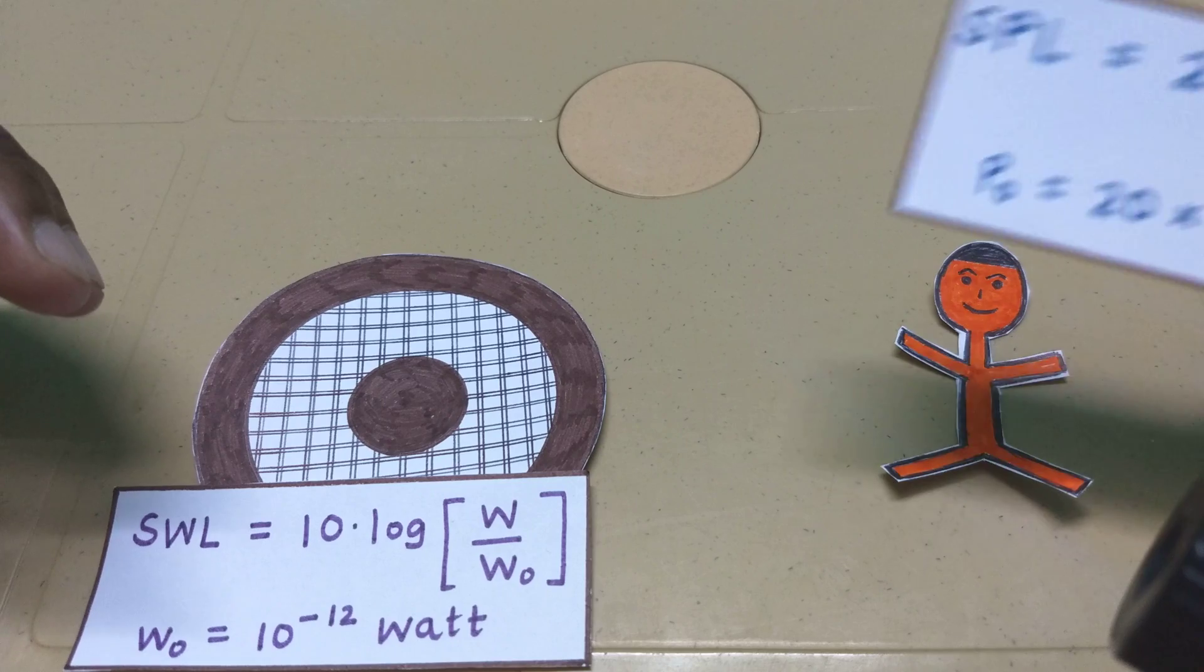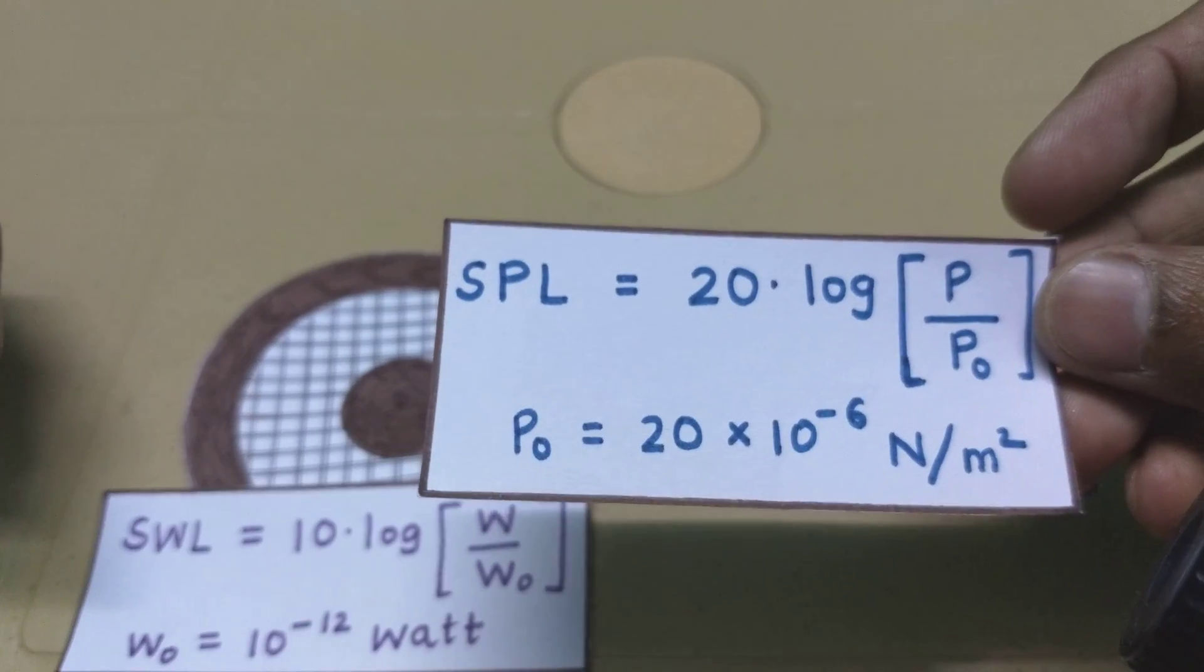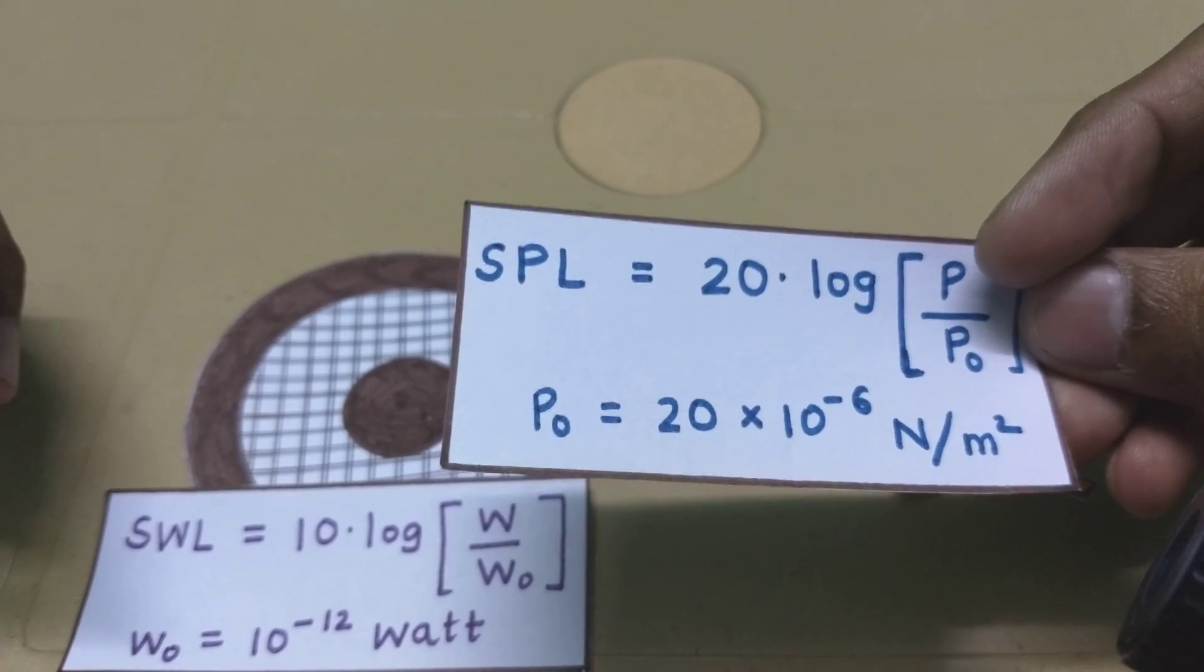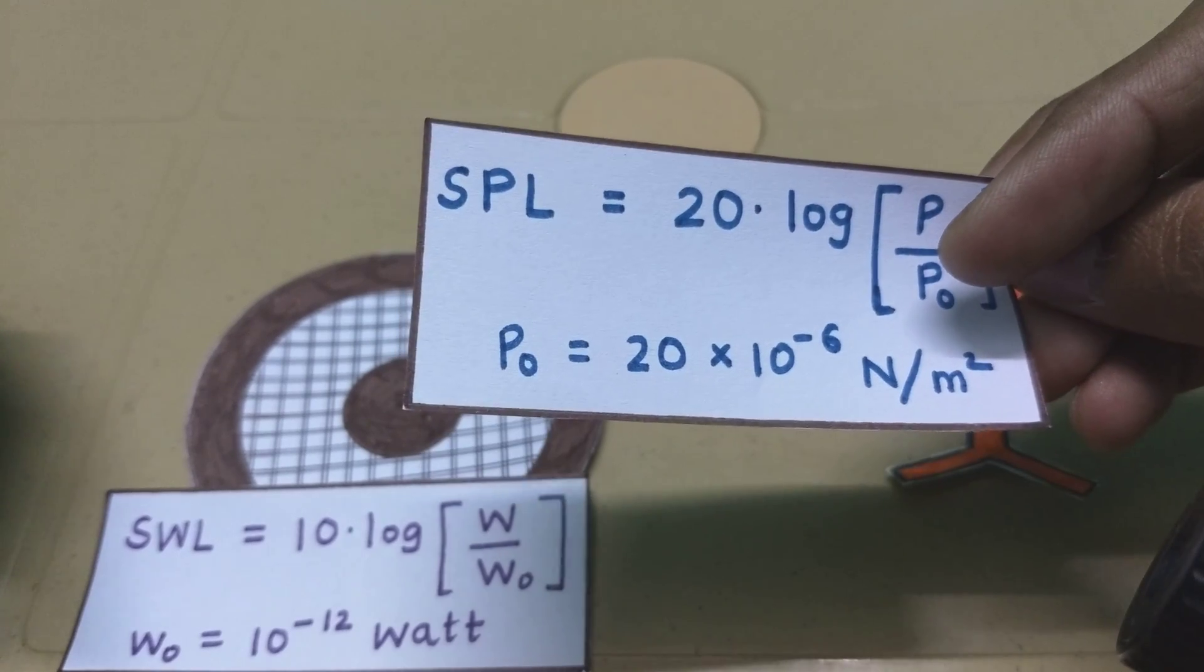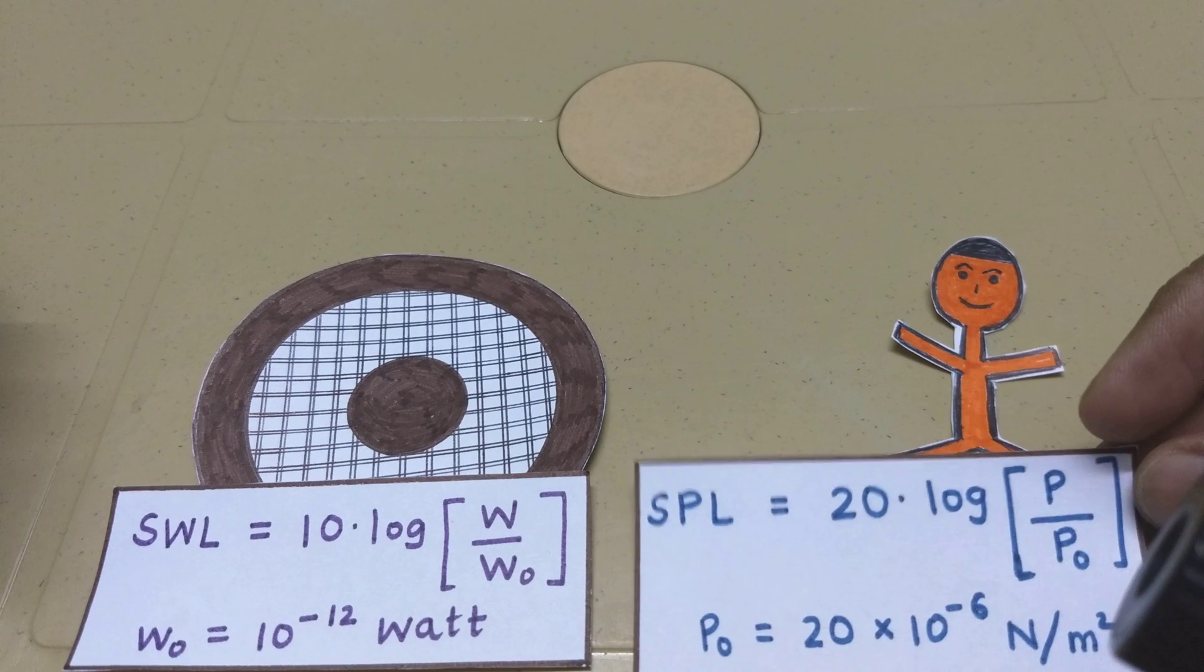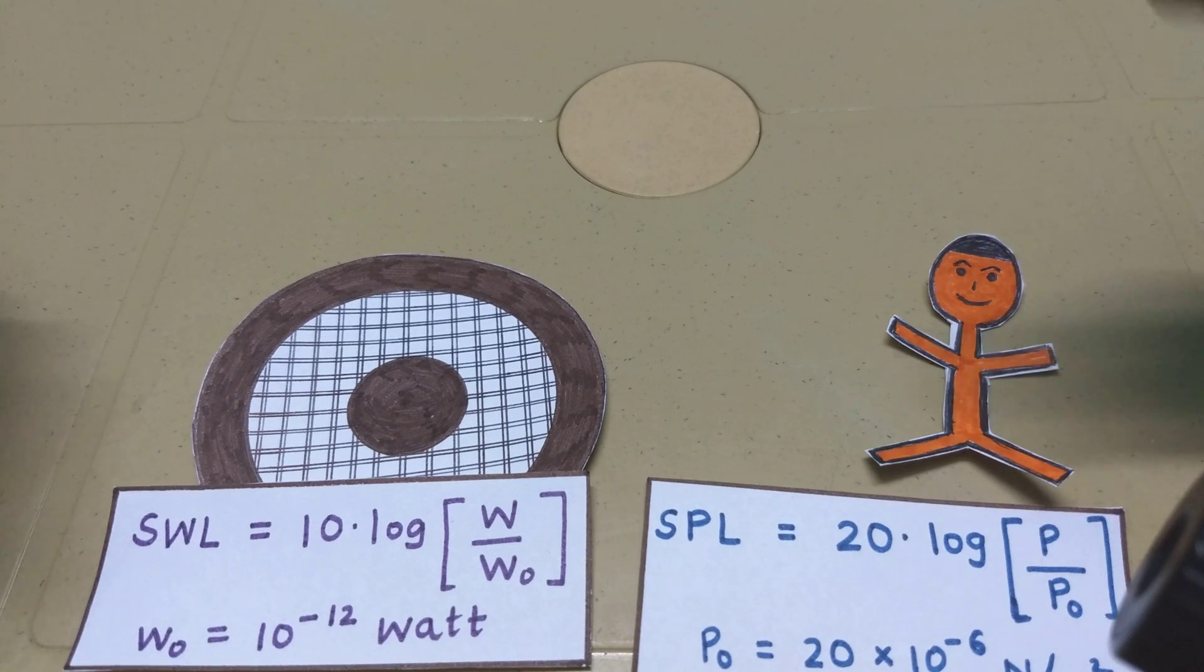This is the equation for the sound pressure level. Now again, this is the pressure as registered by Bob and this is the reference pressure. You divide it and you get it. But Bob will be better off using a microphone to just register the sound pressure level.